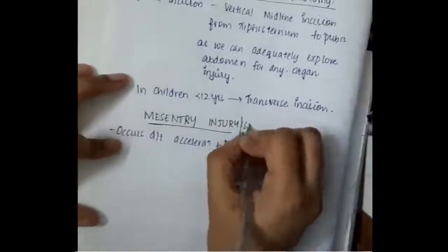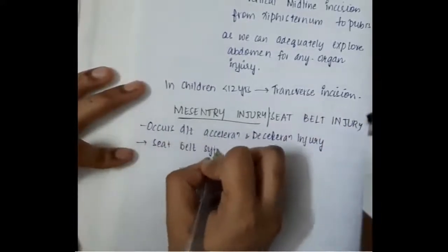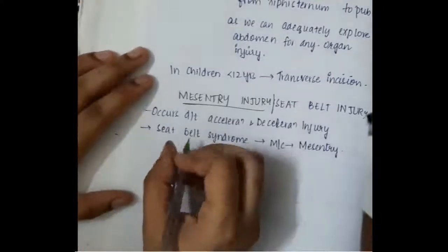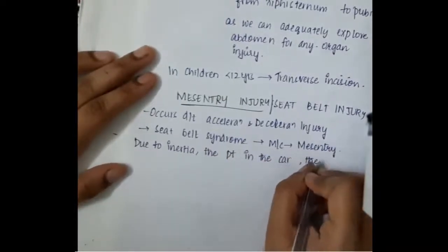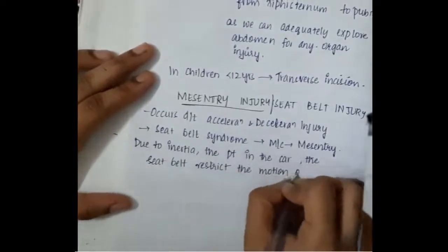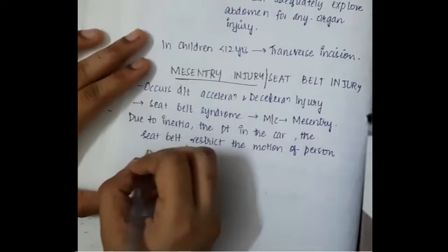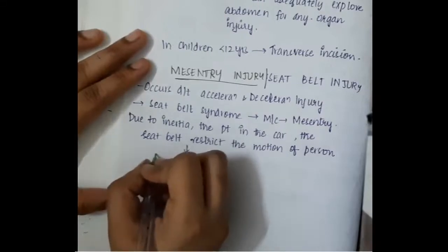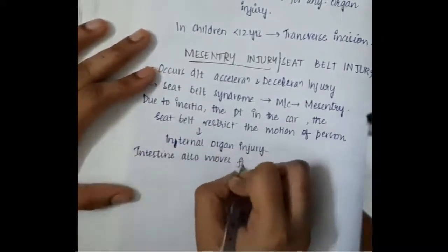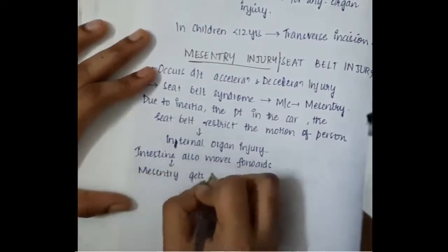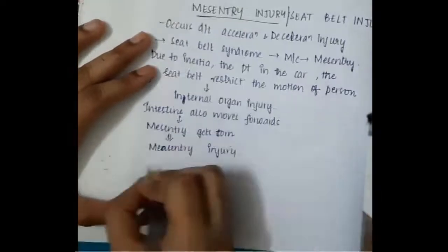It occurs due to acceleration and deceleration injury. We have something called seat belt syndrome, which is most commonly seen in the mesentery. Due to inertia, when a patient is in a car and there is an accident, the seat belt restricts the forward motion of the person. Because of inertia, the intestines also move forward, but the seat belt restricts their motion, so the mesentery gets torn, leading to mesenteric injury.